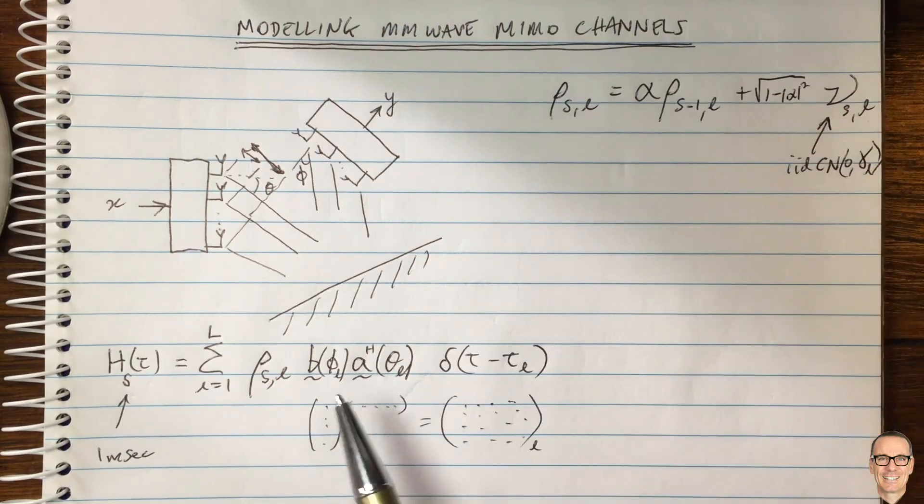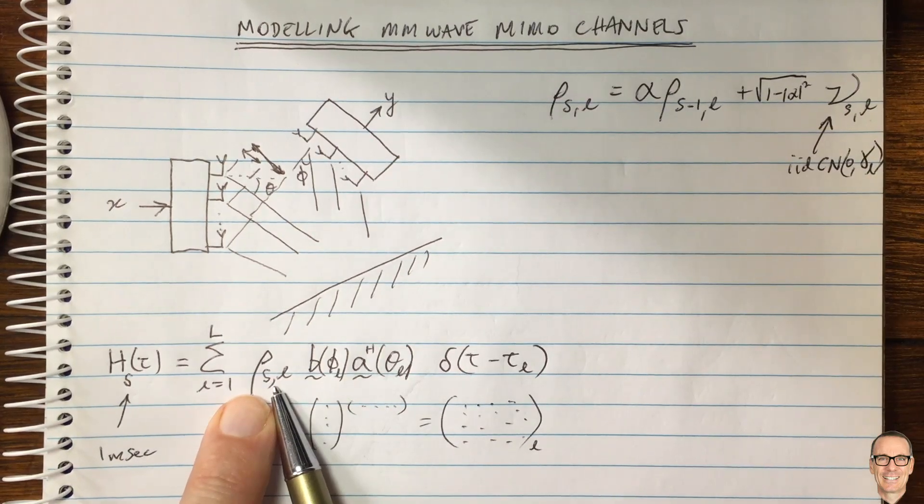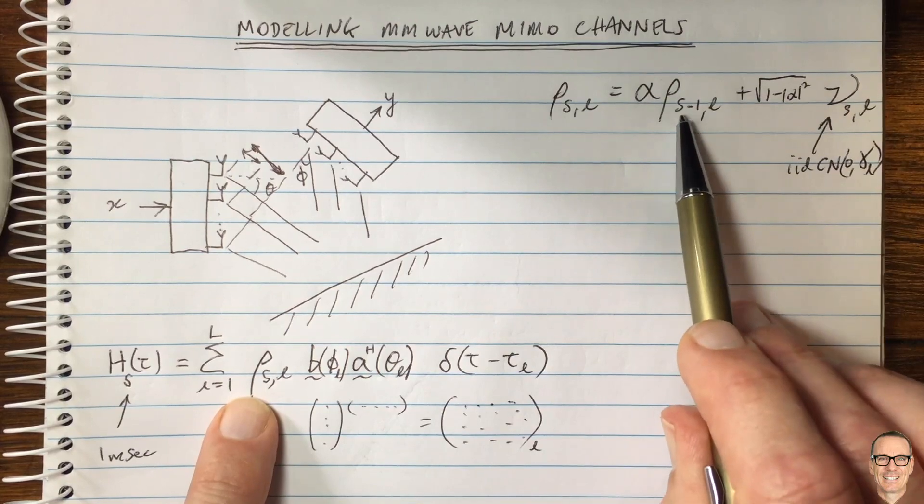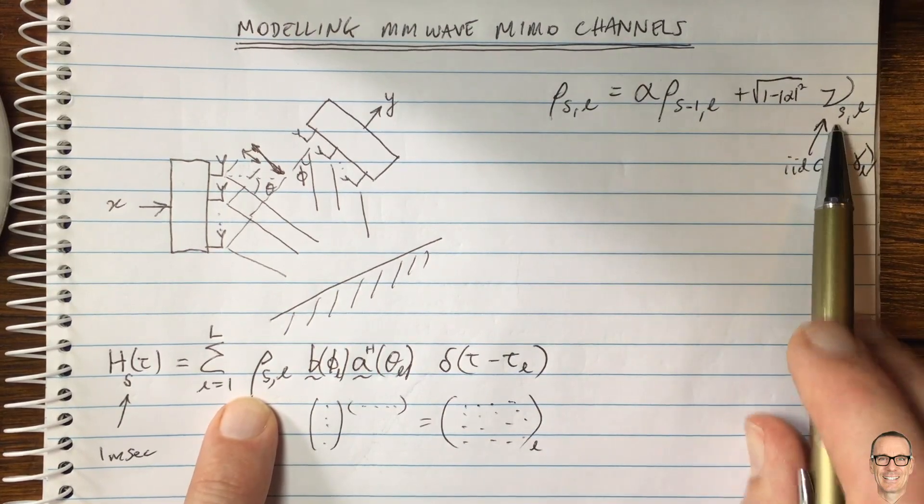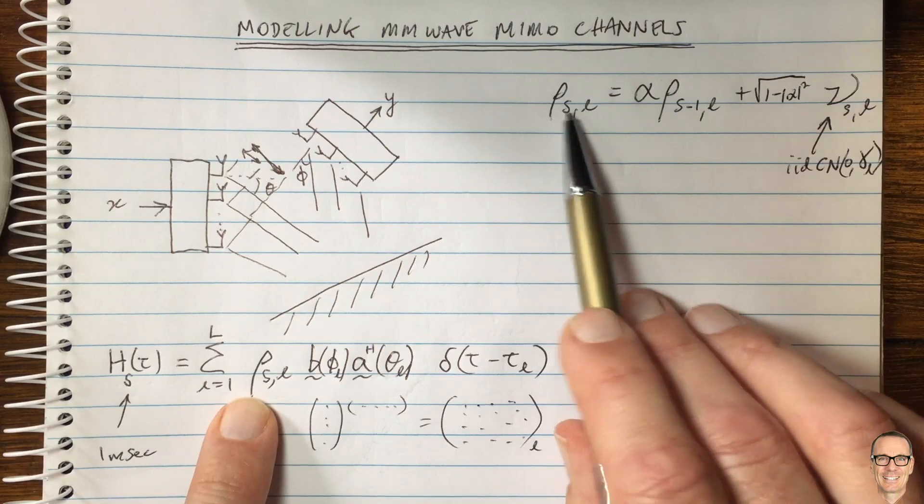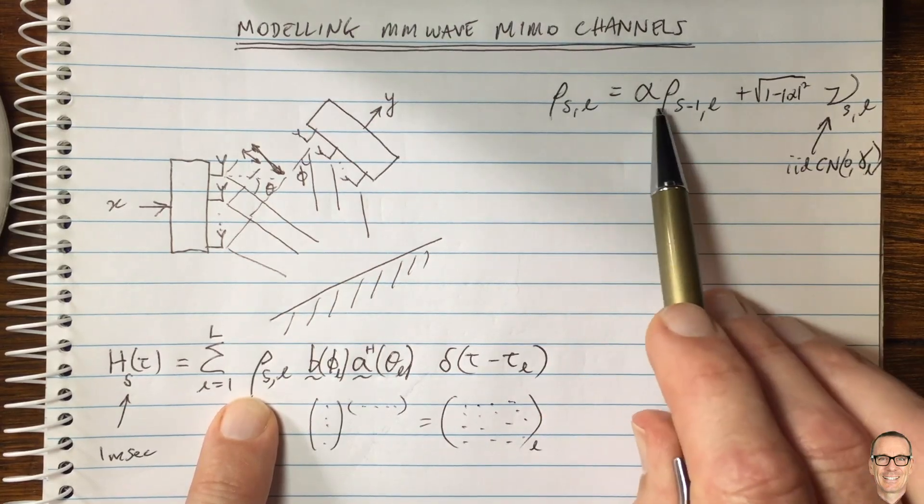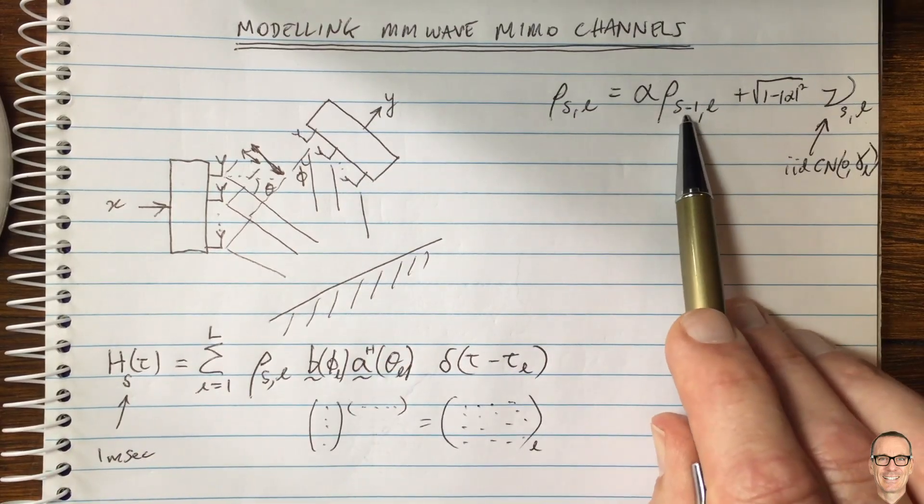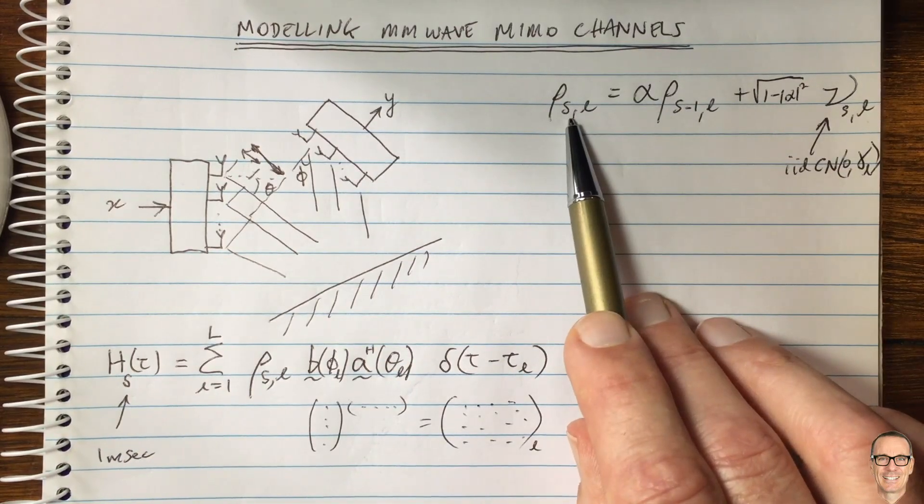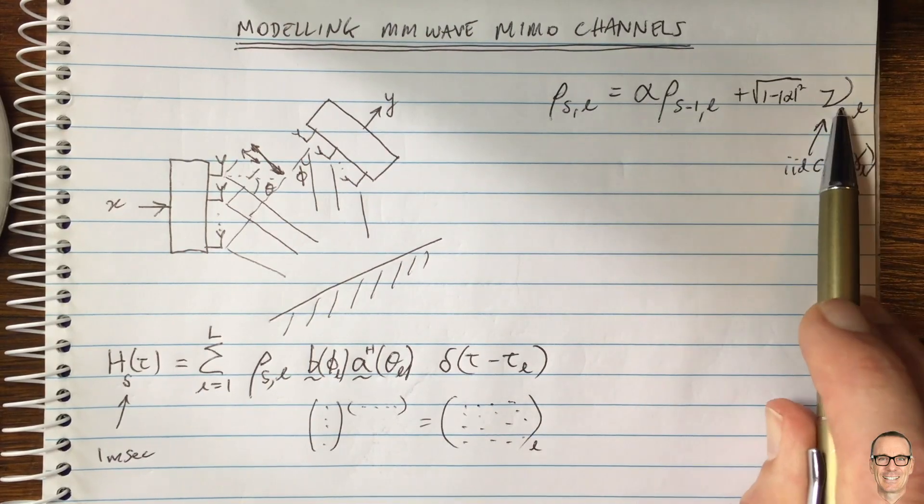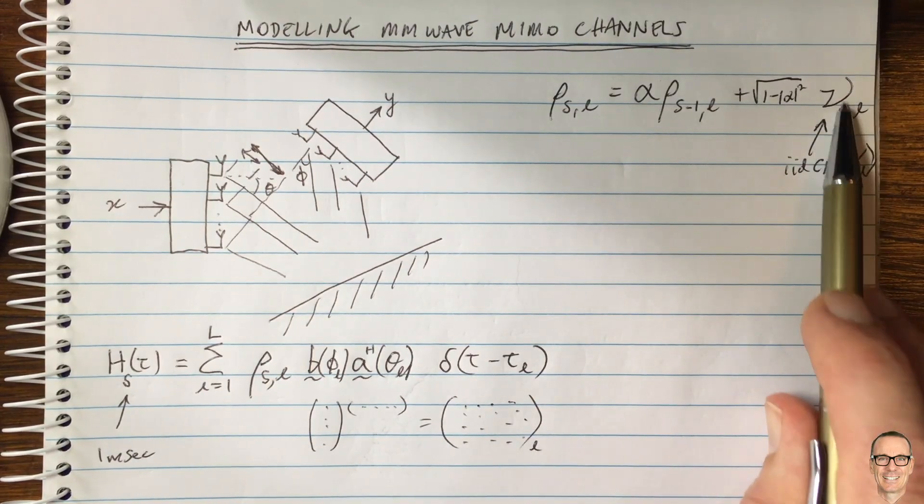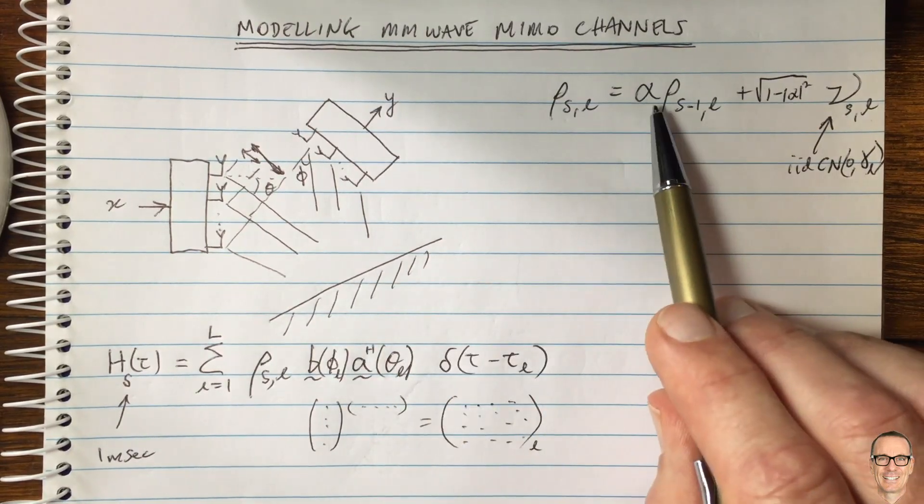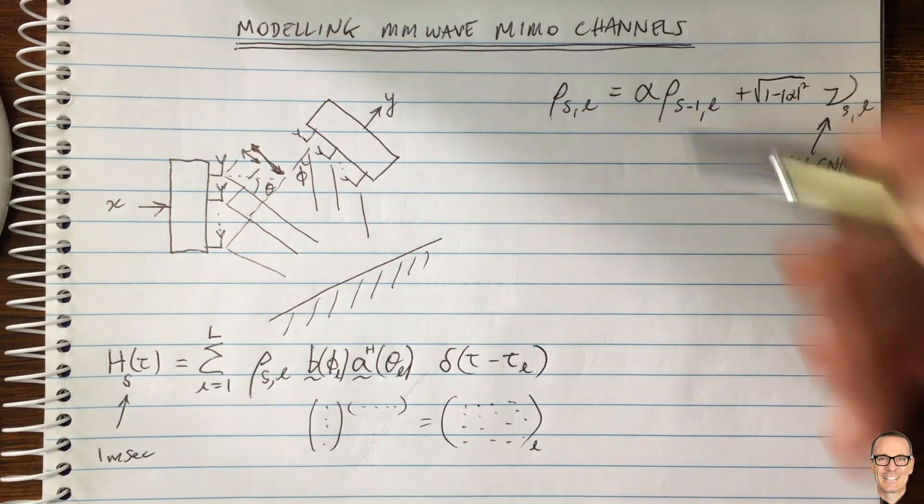And that gamma L is the power of the channel gain for the L path at the S subframe. Okay, so this is the model for the way in which the channel gain changes with time. And so that's an important point to note here that this is a model, it's a Gauss-Markov model, it's a very common one. And it essentially says that the current channel gain equals a correlation factor times the previous channel gain. So it's a smoothly changing channel gain from one subframe to the next. So now, and this is defined here, complex normal, it's a random component to that channel gain to model how all these small changes happen. Okay, so now we've got an equation, now we've got an alpha. So how do we model alpha?